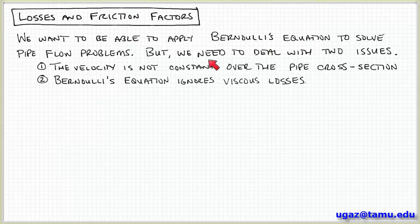The first issue is that the flow velocity in a pipe is not constant over the pipe cross section, because we have no slip condition at the walls. So we needed to find a way to incorporate that into Bernoulli's equation. And we did that in the last video using the kinetic energy correction factor. So we've taken care of this issue.